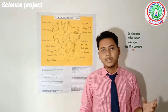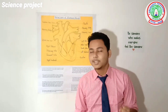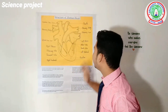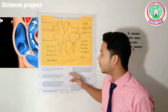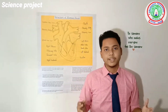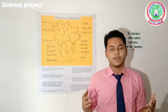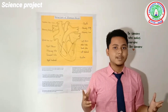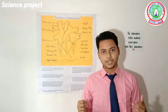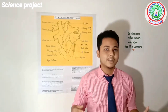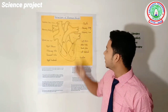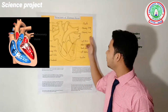When the right side of the heart contracts, the deoxygenated blood flows into the pulmonary artery through the pulmonary valve. This pulmonary artery carries the deoxygenated blood to the lungs for oxygenation. After oxygenation is complete, the oxygenated blood enters the left atrium of the heart through the pulmonary veins.